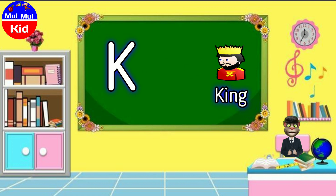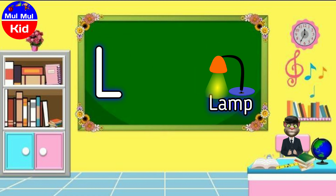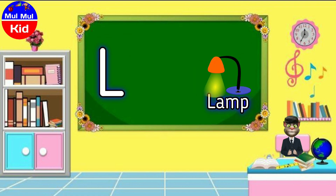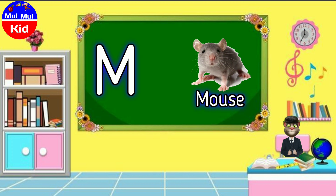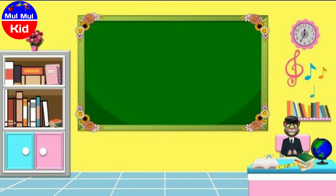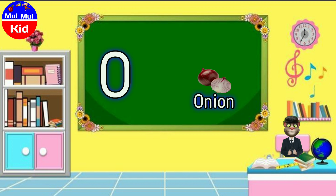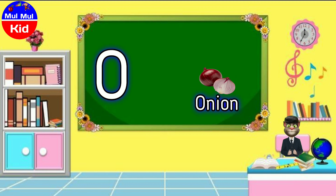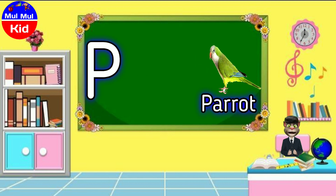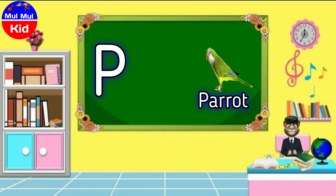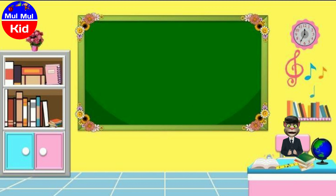K for King, L for Lab, M for Mouth, N for Nest, O for Onion, P for Parrot.